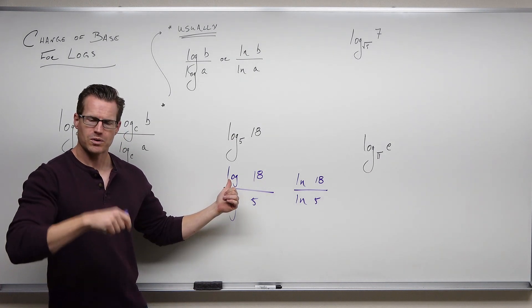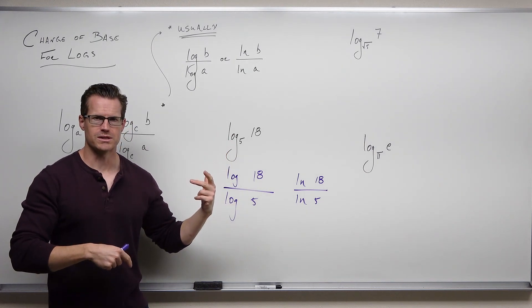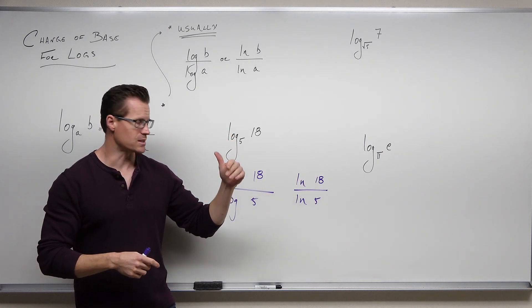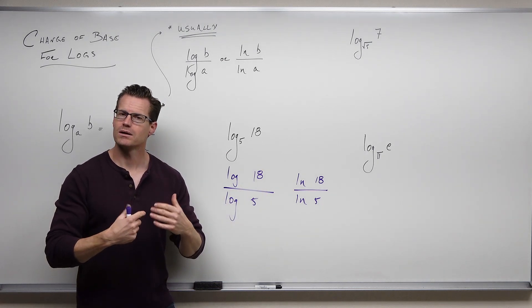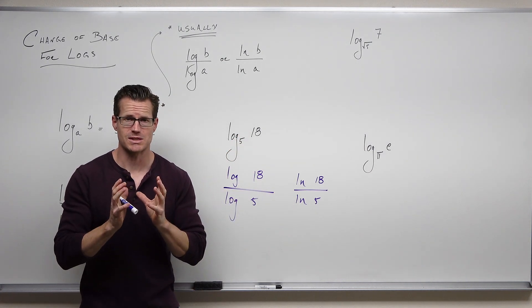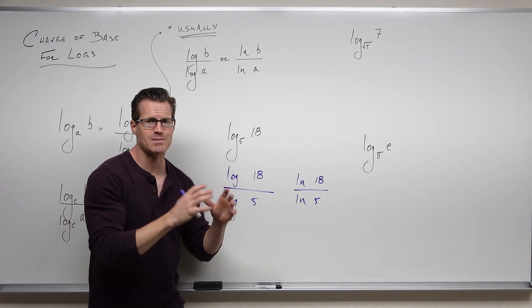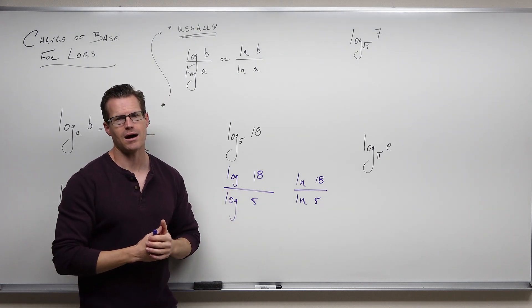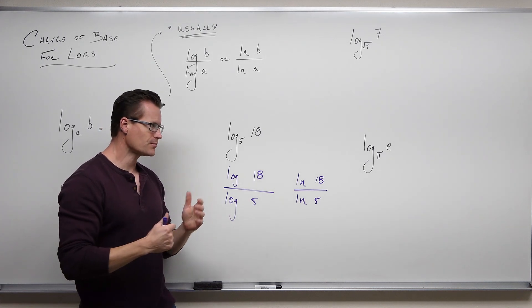Now, you should try it and hopefully it works well for you. Try log, press the log button, press 18, close your parentheses, divide by log 5. Then try LN 18, close your parentheses, and then divide by LN 5. They should give you the same number. So while they look different, all of these represent the same exact expression. They all are the same exact number, just different ways to look at it. Different bases that we have, same stuff.